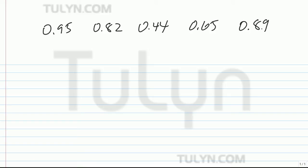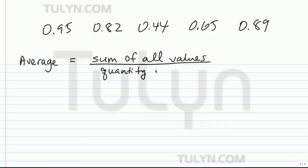All right, so let's see. Find the average, write the formula out. Sum of all values divided by the quantity of values. So let's sum it up: 0.95 plus 0.82 plus 0.44 plus 0.65 plus 0.89.